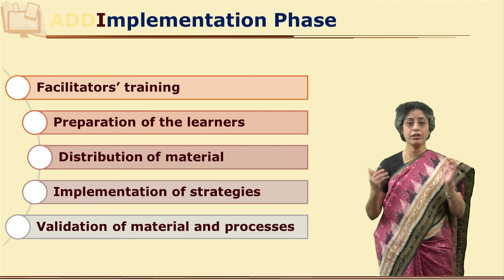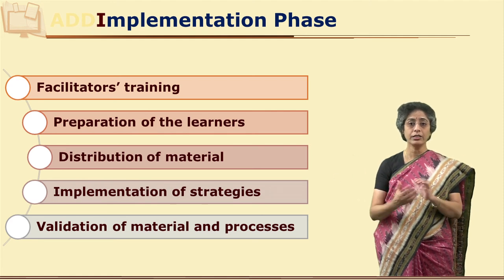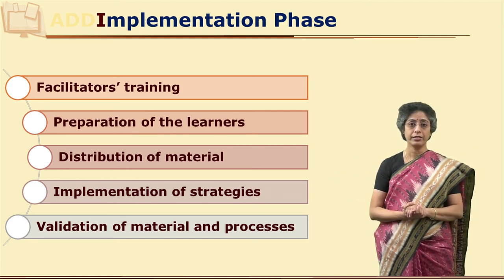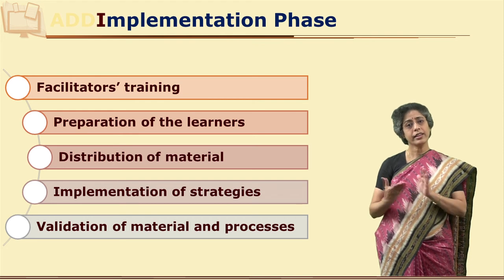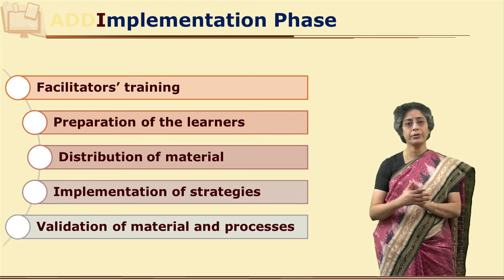The final validation of the material and processes actually happens in the implementation phase. Once this validation is done, institutionalization of the material and the entire course happens — that is, the course gets implemented in each and every institution. Implementation is not the last stage. Even though we start the program, continuous evaluation is essential. Open and distance material is never an end product; there is always scope for revision.